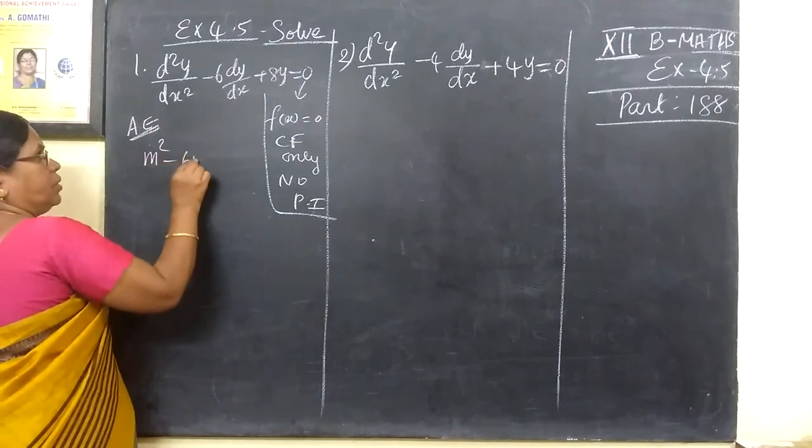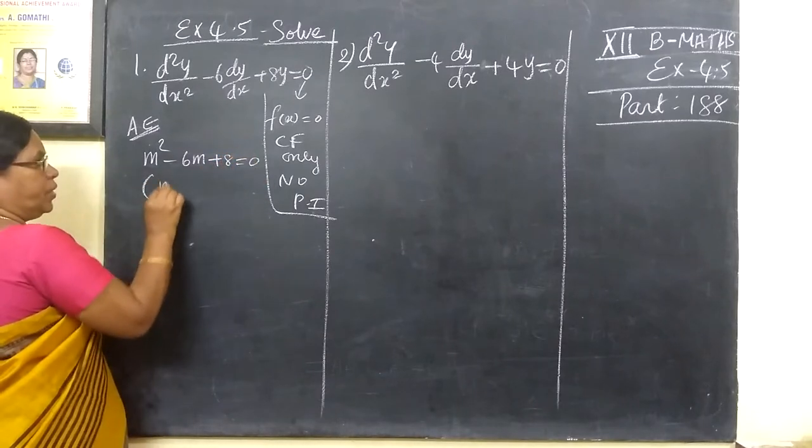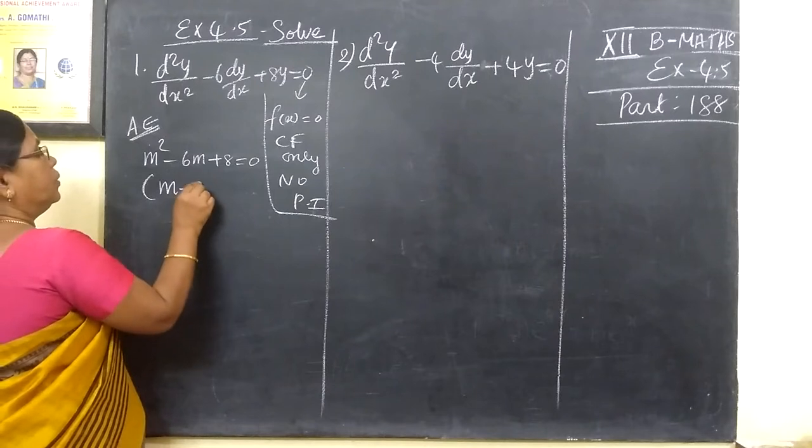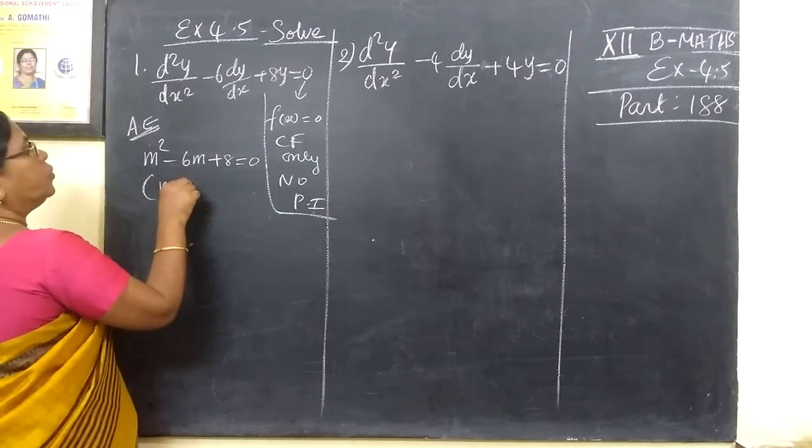m² minus 6m plus 8 equal to 0. So by factorization, we have m minus 4, m minus 2.